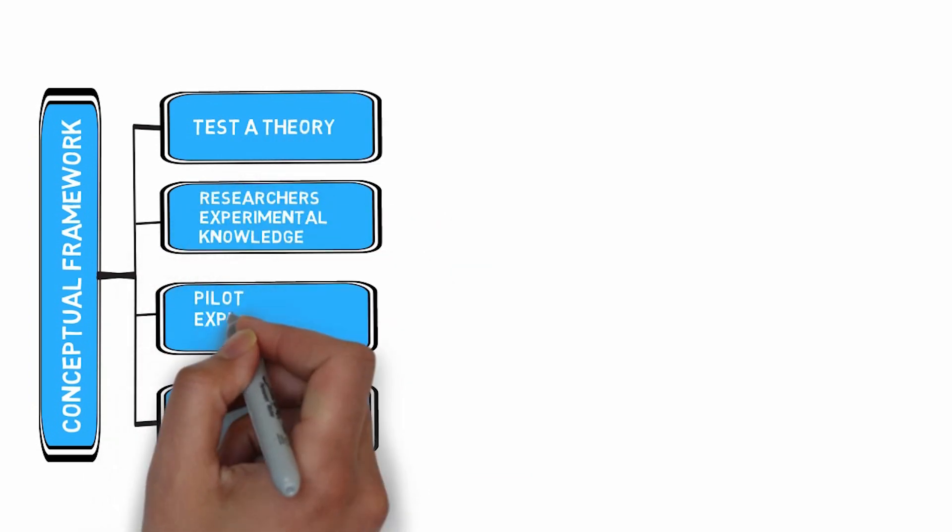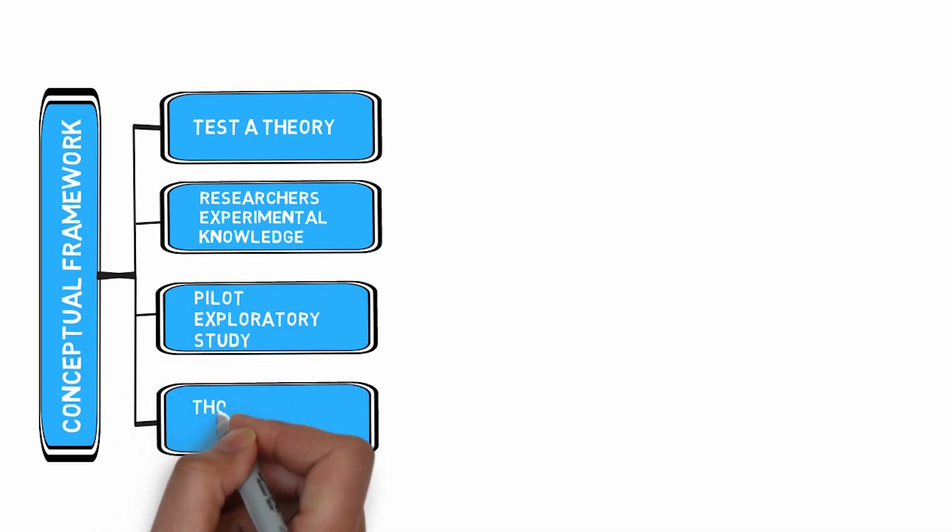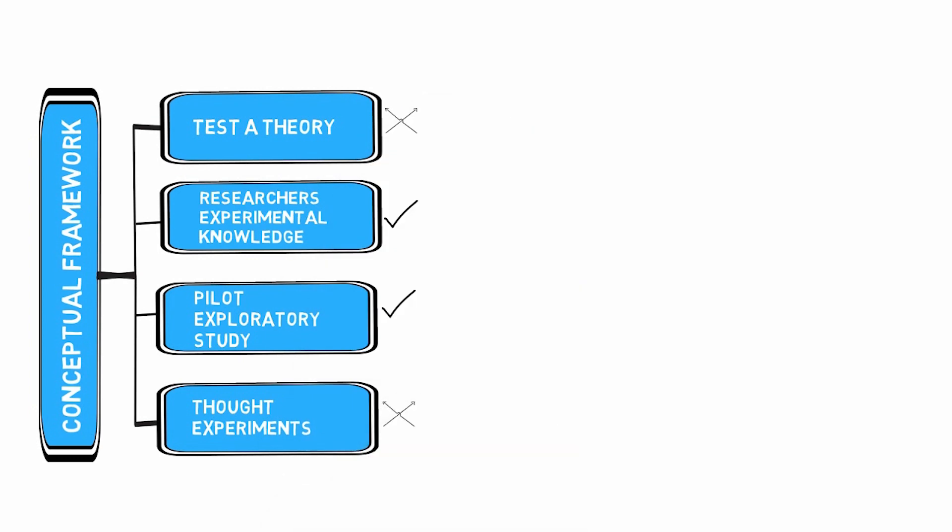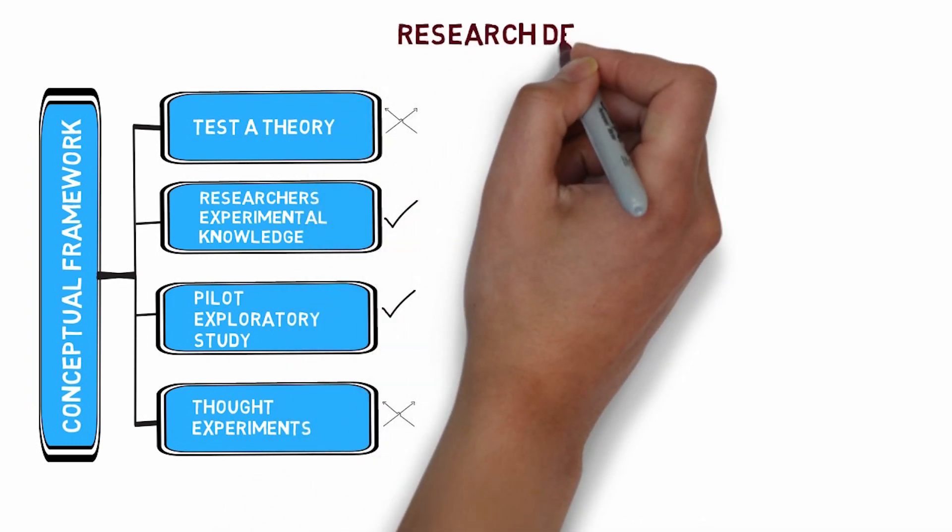With reference to my study objectives or research questions, I selected two ways of Maxwell: that is, researcher experimental knowledge and pilot and exploratory study. As there was no existing theory in my case, so I had to conduct a pilot study to further proceed with my own exact study.